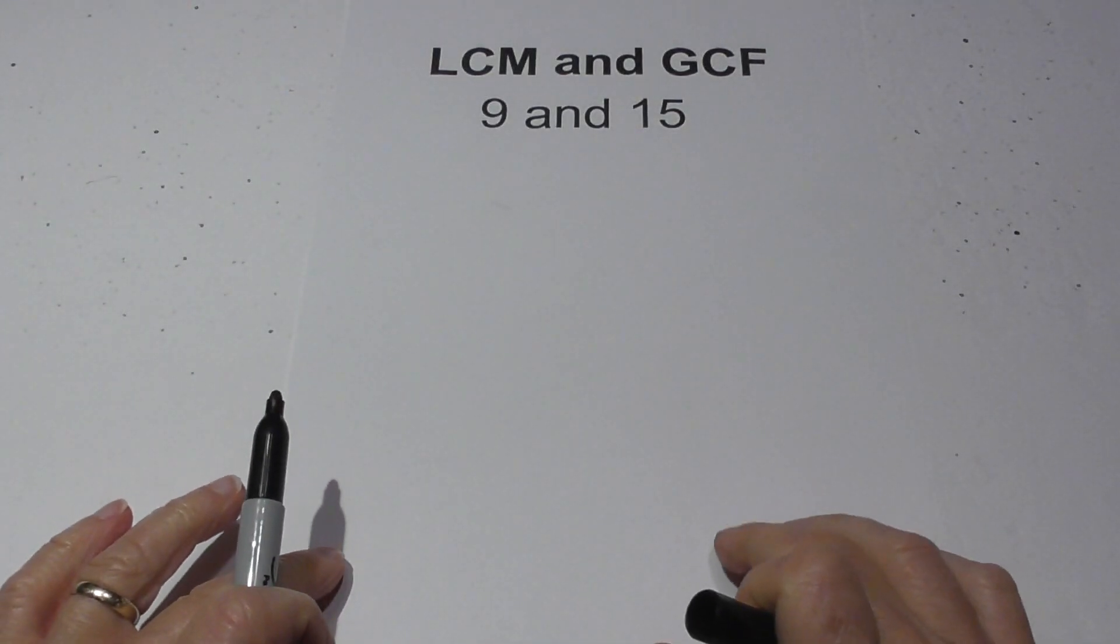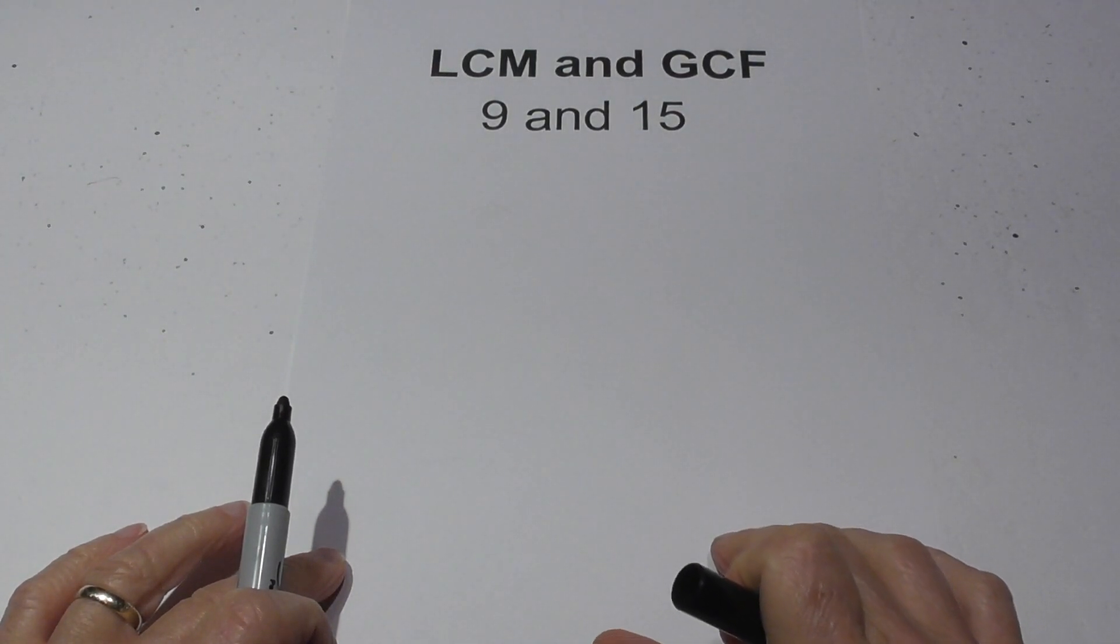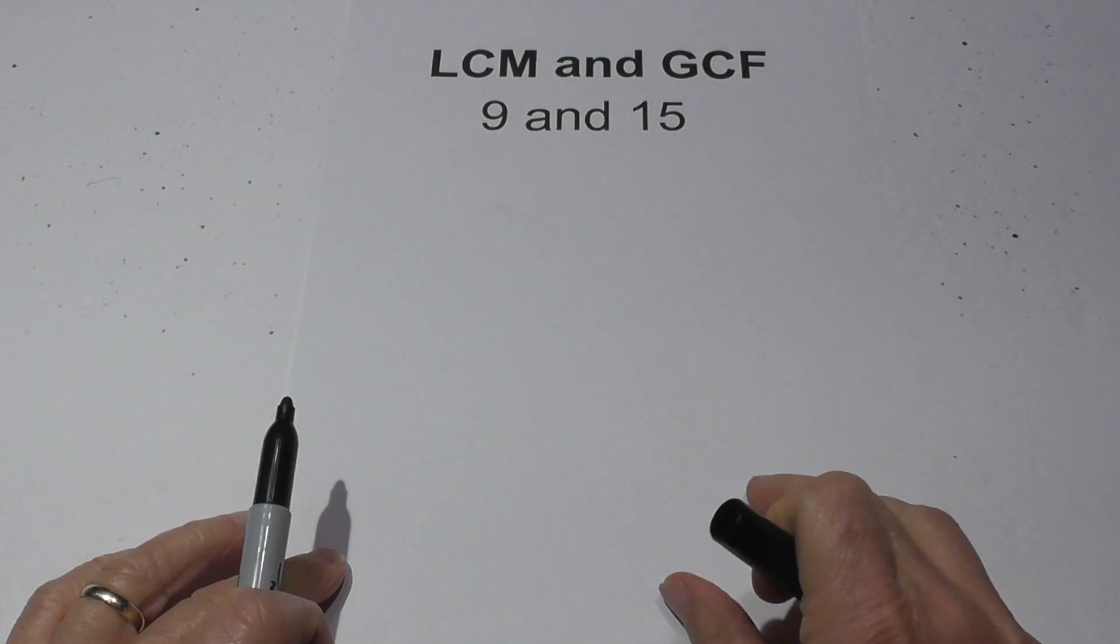Welcome to Moo Moo Math and Science and the LCM Lowest Common Multiple and Greatest Common Factor of 9 and 15. So let's get started.